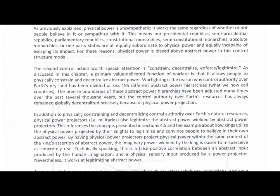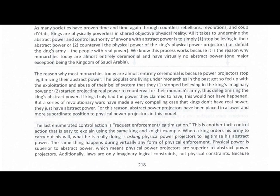Technically speaking, this is a false positive correlation between an abstract input produced by the human imagination and a physical sensory input produced by the power projector. Nevertheless, it works at legitimizing abstract power. As many societies have proven through countless rebellions, revolutions, and coup d'états, kings are physically powerless in shared objective physical reality. All it takes to undermine the abstract power of anyone with abstract power is to either stop believing in their abstract power, or countervail the physical power of the king's physical power projectors — i.e., defeat the king's army. We know this process works because it is the reason why monarchies today are almost entirely ceremonial and have virtually no abstract power, with one major exception being the Kingdom of Saudi Arabia.